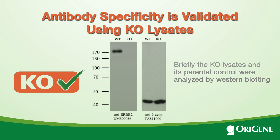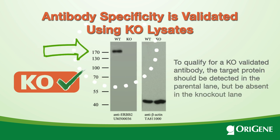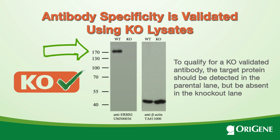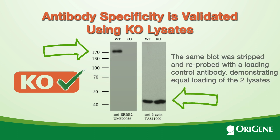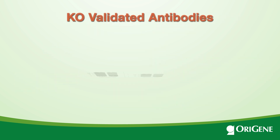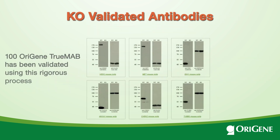Briefly, the KO lysate and its parental control lysate were analyzed by Western blotting. To qualify for a KO validated antibody, the target protein should be detected in the parental lane but be absent in the knockout lane. The same blot was stripped and reprobed with a loading control antibody, demonstrating equal loading of the two lysates.